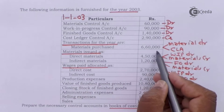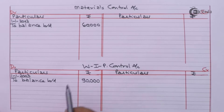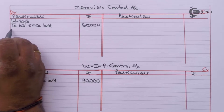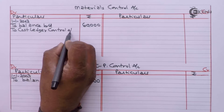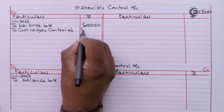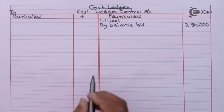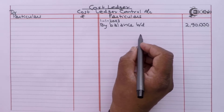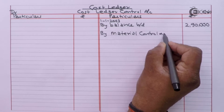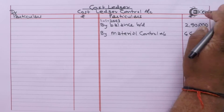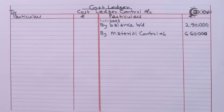Let us now record transactions during the year. Material purchased: 6,60,000 — this will be recorded to the debit of Material Control Account. To Cost Ledger Control Account: 6,60,000. In Cost Ledger Control Account, it will be recorded on the credit side — by Material Control Account 6,60,000.